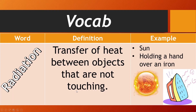Next we have radiation. Radiation is the transfer of heat between objects that are not touching. For example, the Sun is really far away but it can still warm you up if you're standing under it — that's radiation. You can also hold your hand over a hot iron: your hand is hovering over it and you can feel the heat without touching the metal. That's radiation — heat transfer between objects that are not touching.